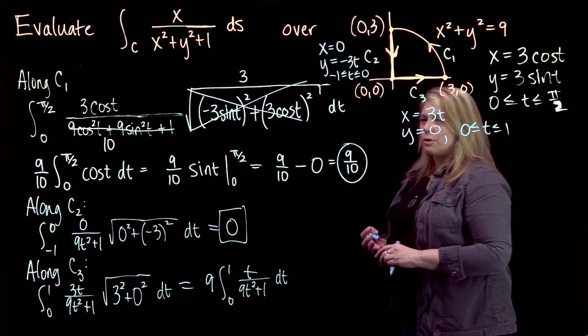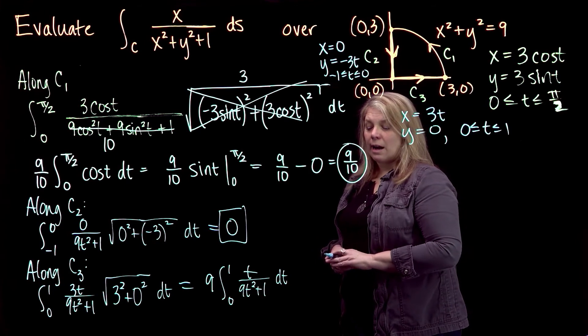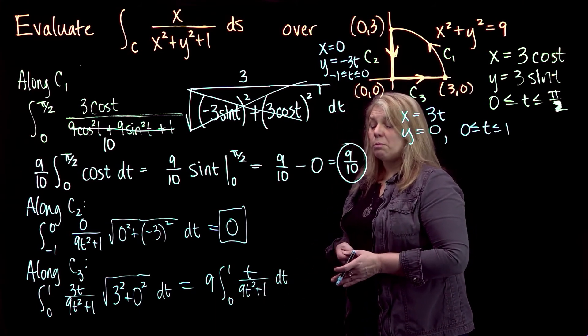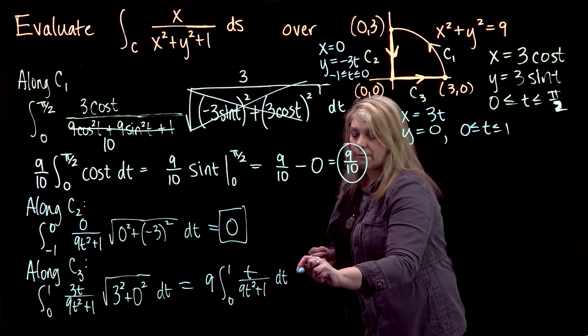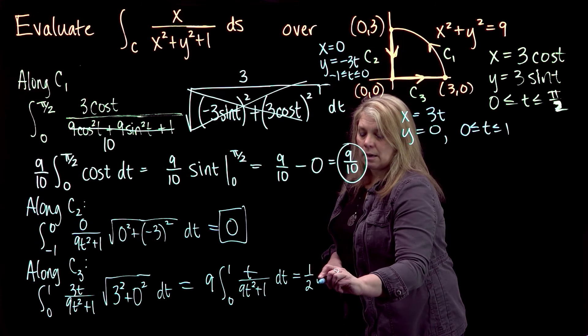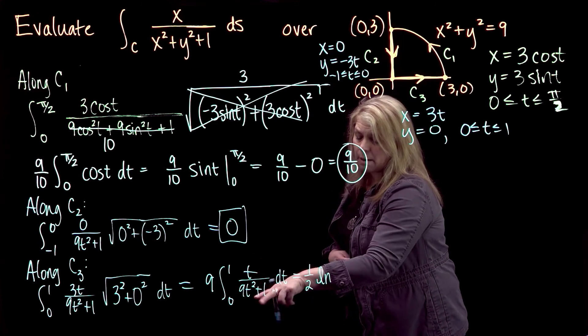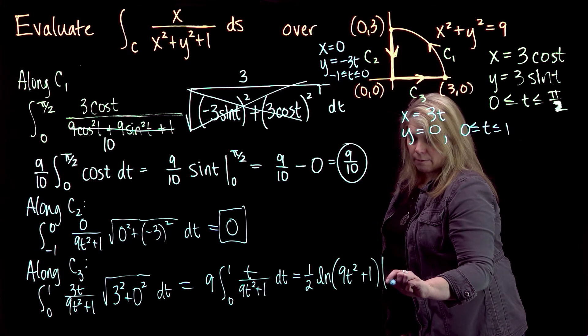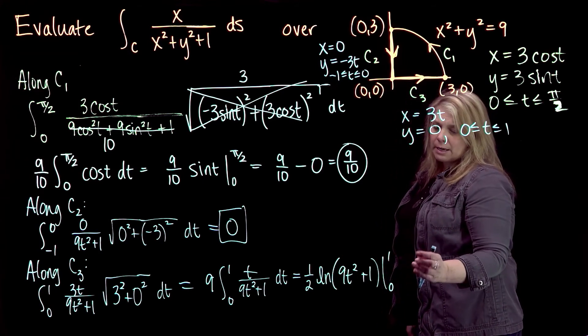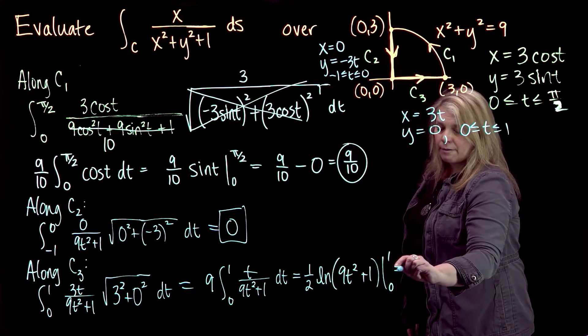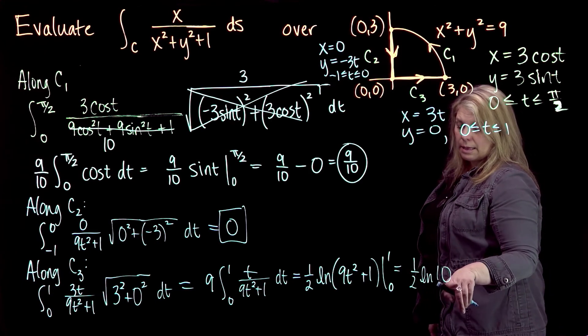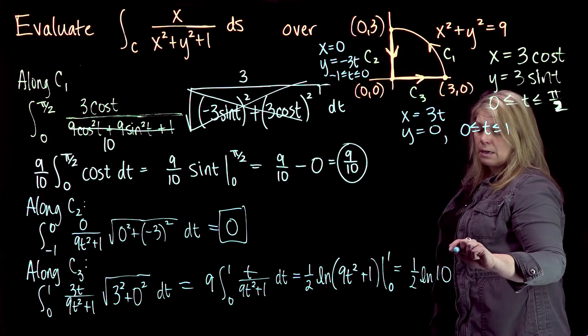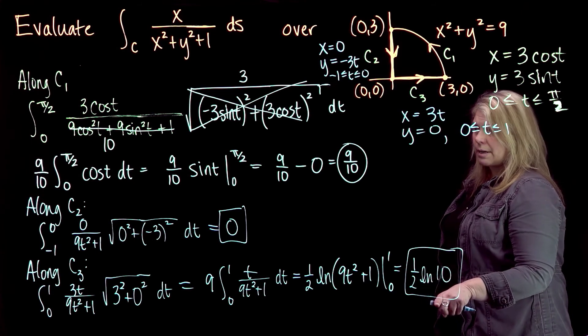You have to do this integration. It's a little u-substitution. You'll let u equal this denominator, u equals 9t squared plus 1. Your du would be 18t dt, so you end up with an extra factor of 1/2 as part of that integration. Natural log of 9t squared plus 1 evaluated from 0 to 1. Putting in our limits of integration, when I put in 1, I'll have 1/2 times natural log of 10. When I put in 0, I will have 1/2 times natural log of 1, which is 0. So along this part of the curve, I just end up with 1/2 times natural log of 10.